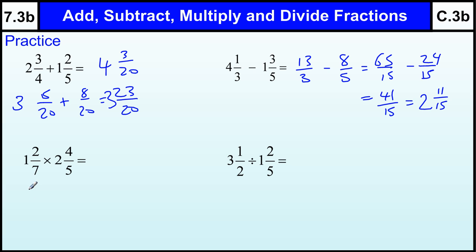Next one. Change it to top heavy again. So 1 times 7 plus 2 is 9 over 7, times 2 times 5 is 10 plus 4 is 14 over 5. Okay, a little tip to try to help you a little bit here. When you're multiplying fractions, if you can cancel anything on the top with anything on the bottom, then it will save you having to do the difficult multiplication. So let me just show you that. On this one,